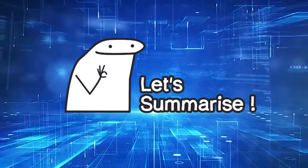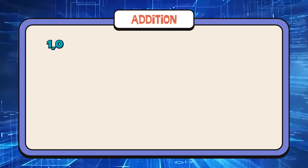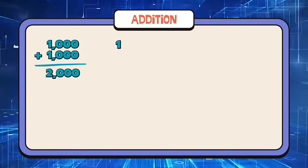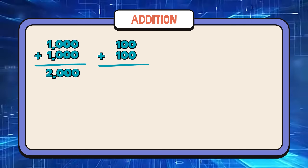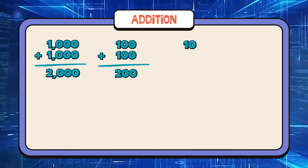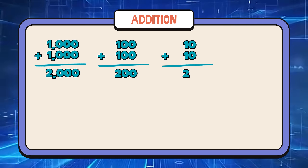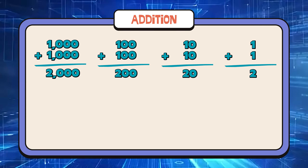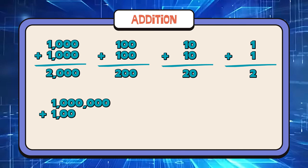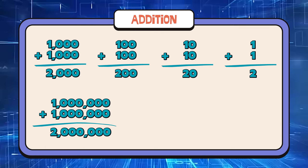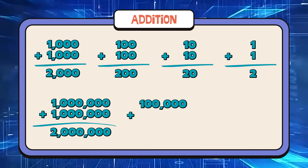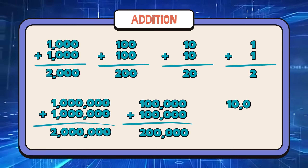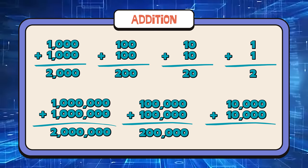Let's summarize. Let's learn addition. 1,000 plus 1,000 is equals 2,000. 100 plus 100 is equals 200. 1,000,000 plus 1,000,000 is equals 2,000,000. 100,000 plus 100,000 is equals 200,000. 10,000 plus 10,000 is equals 20,000.